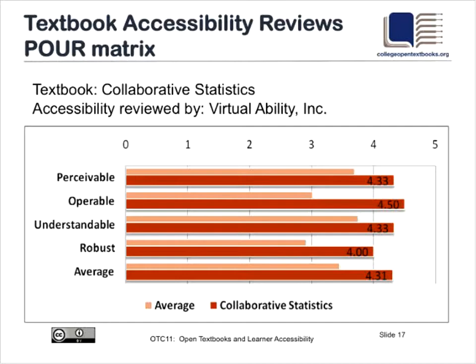The Perceivable and Understandable principles are related because they both describe the mental processes of the learner. Perceivable means information and user interface components can be sensed in some form by the user. Understandable means material can be interpreted, comprehended, and used by the learner. The Operable and Robust principles are related — they both describe the usability of the medium providing the information. Operability describes the proper functioning of all elements, while Robustness means it is designed to function properly not only now but in the future using current and future kinds of assistive technology.